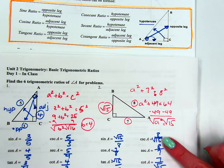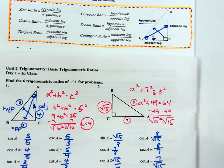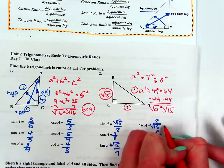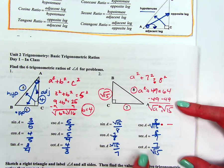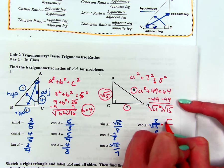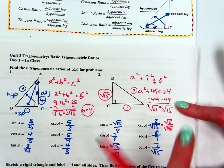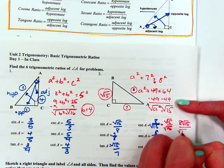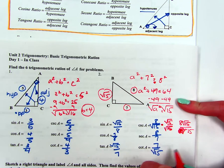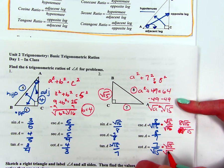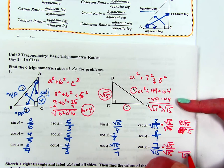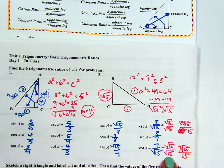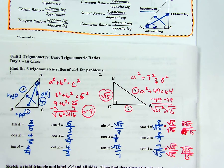On these problems, for cosecant and cotangent of angle A, there is a radical in the bottom of the fraction — and we cannot have a radical in the denominator. What we're going to do is multiply that fraction by the radical that's in the bottom, both in the top and in the bottom. For cosecant, that gives us 8√15 over 15, since √15 times √15 is just 15. Same thing for cotangent: we multiply by √15 over √15, giving us 7√15 over 15. Any time you see a radical in the bottom, you have to multiply by itself to eliminate it.